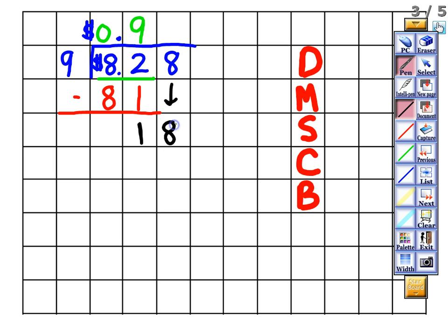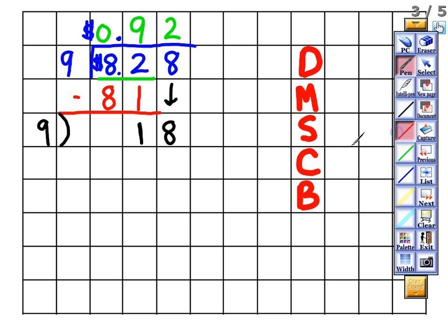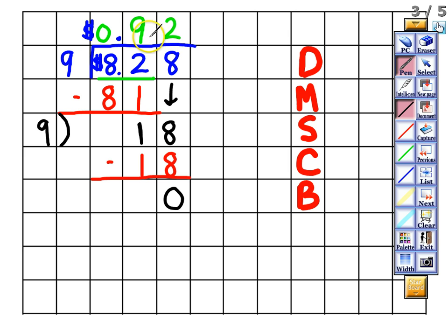We bring down the eight, making 18. Now it's time to divide again: nine into 18, or 18 divided by nine, gives two. Two times nine is 18. We subtract: 18 minus 18 is zero. There's nothing else to bring down, so we're finished. $8.28 divided by nine gives us $0.92 — that represents 92 cents. So if you have $8.28 and give it to your nine closest friends, each friend would get 92 cents.